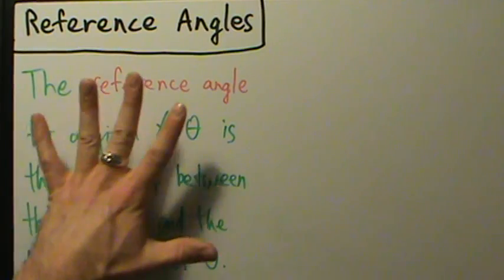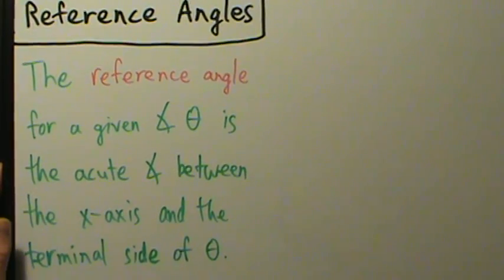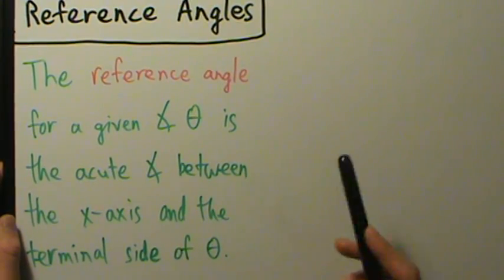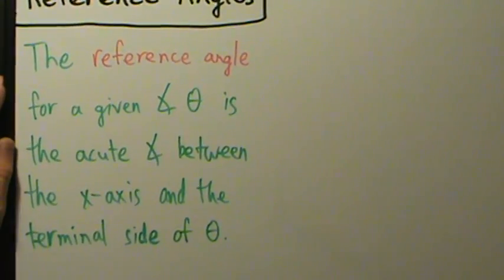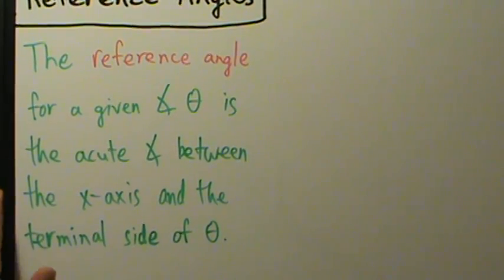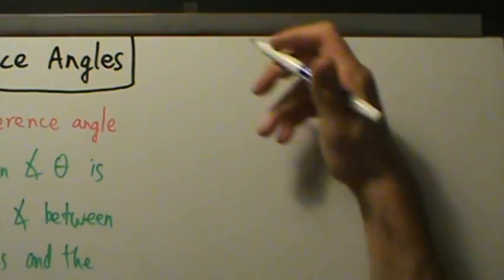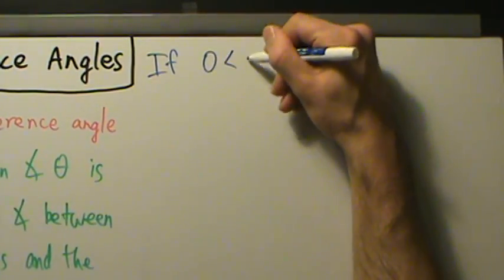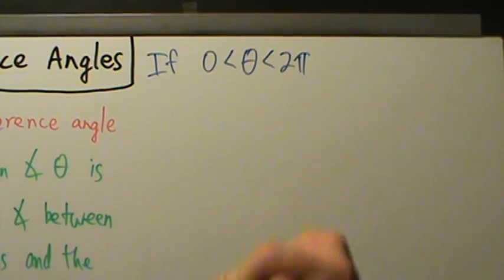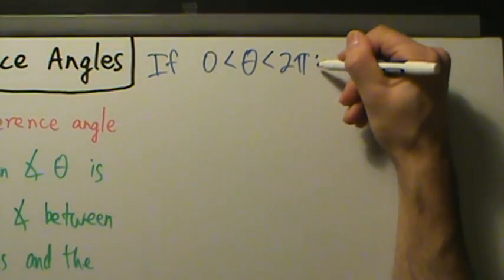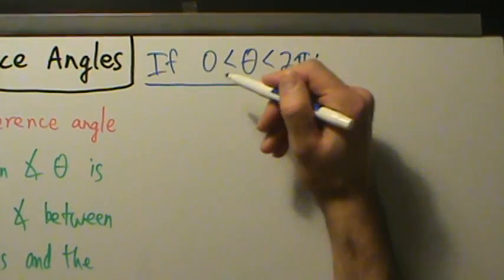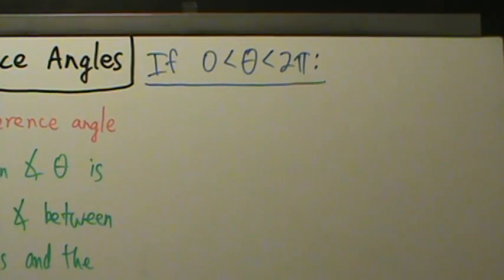There are four cases depending on which quadrant the terminal side of theta falls in. Also, if theta is larger than two pi radians or smaller than zero radians, we have to do something else first, but we'll talk about that later. For now, let's assume theta is between zero and two pi radians — equivalently, between zero and 360 degrees.